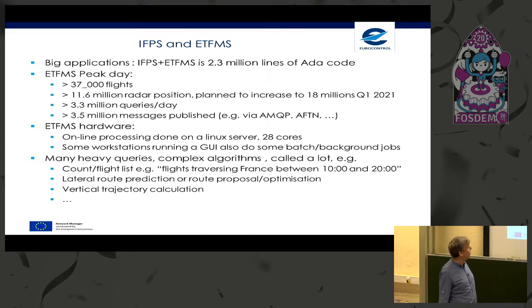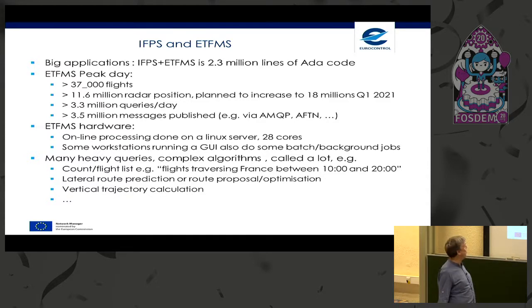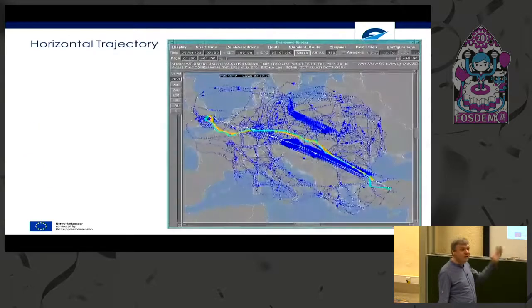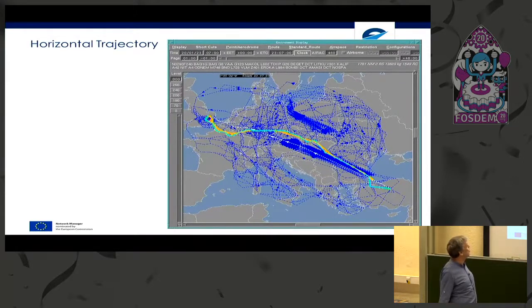We have algorithms like lateral route prediction, route proposal optimization, and vertical trajectory calculation. In 2.3 million lines of code we do a lot.